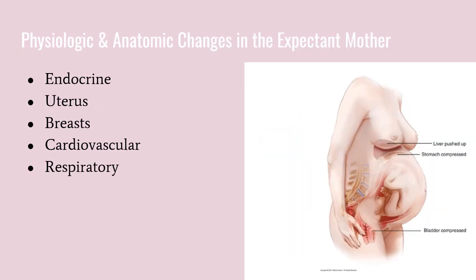Table 11.4 in your Richie text is a great source to study physiologic and anatomic changes in the expectant mother. Regarding the endocrine system, this controls the integrity and duration of gestation by maintaining the corpus luteum, and many hormones are involved. Regarding the uterus, it increases in strength and elasticity to allow contraction and expulsion of the fetus during birth.